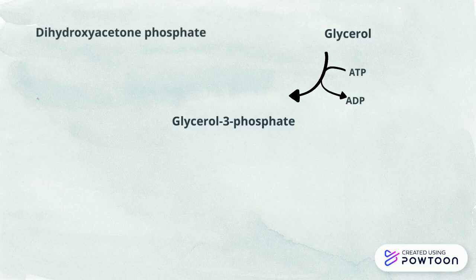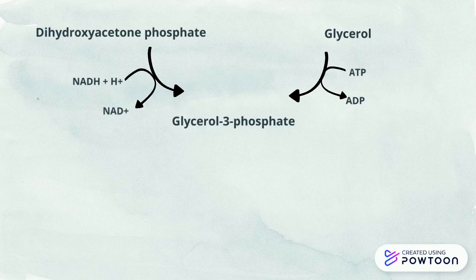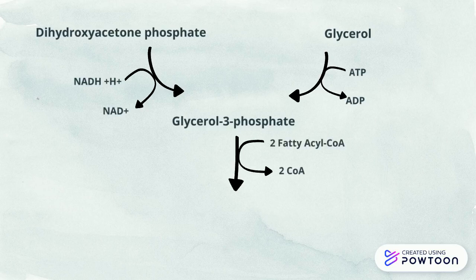Dihydroxyacetone phosphate is reduced to become glycerol-3-phosphate using NADH as a cofactor. NADH is converted to NAD+. With the addition of 2 fatty acyl-CoA, glycerol-3-phosphate is converted to phosphatidic acid.